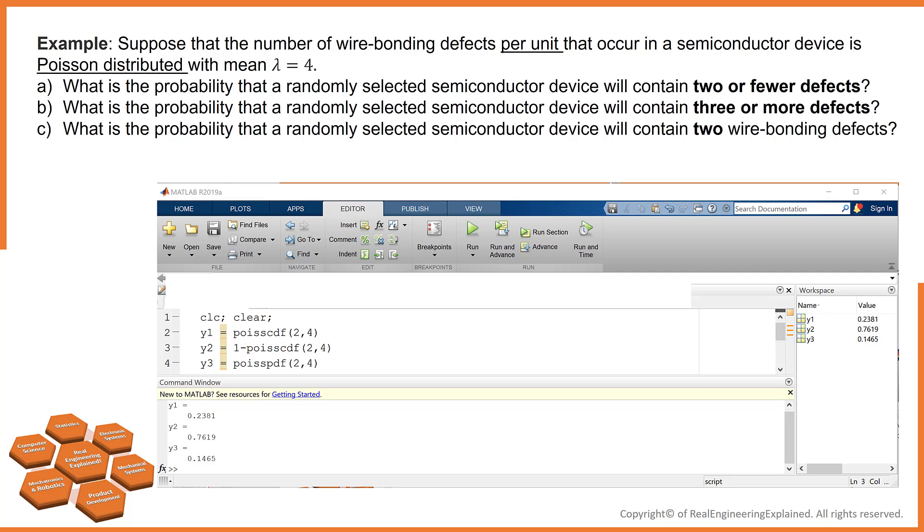To answer this question, we need to use Poisson cumulative distribution function. The first argument is for two or fewer defects. And the second argument is the rate parameter lambda. The answer is 23.8%.